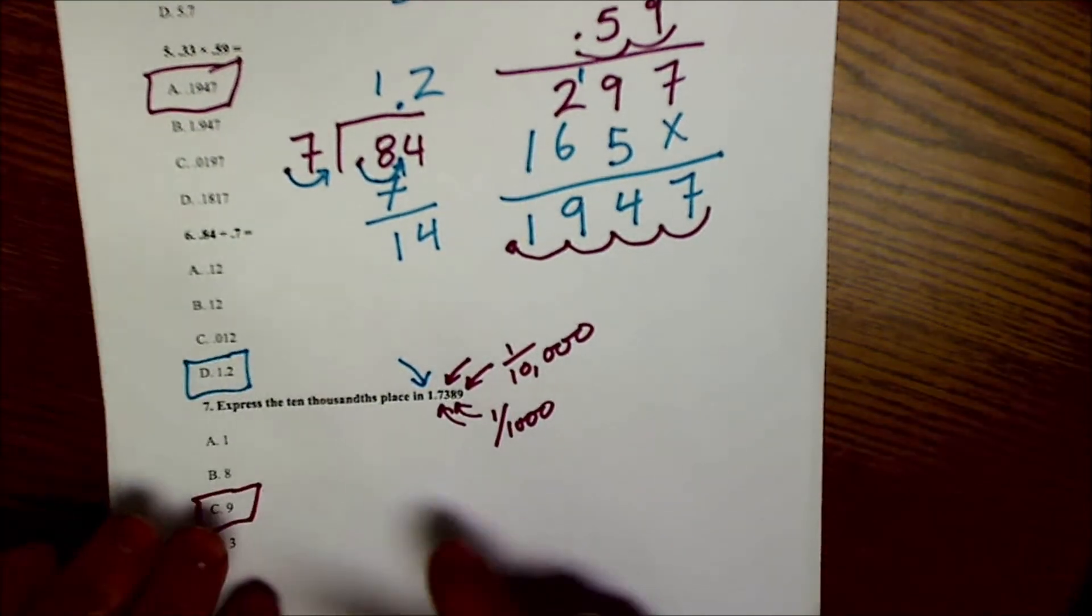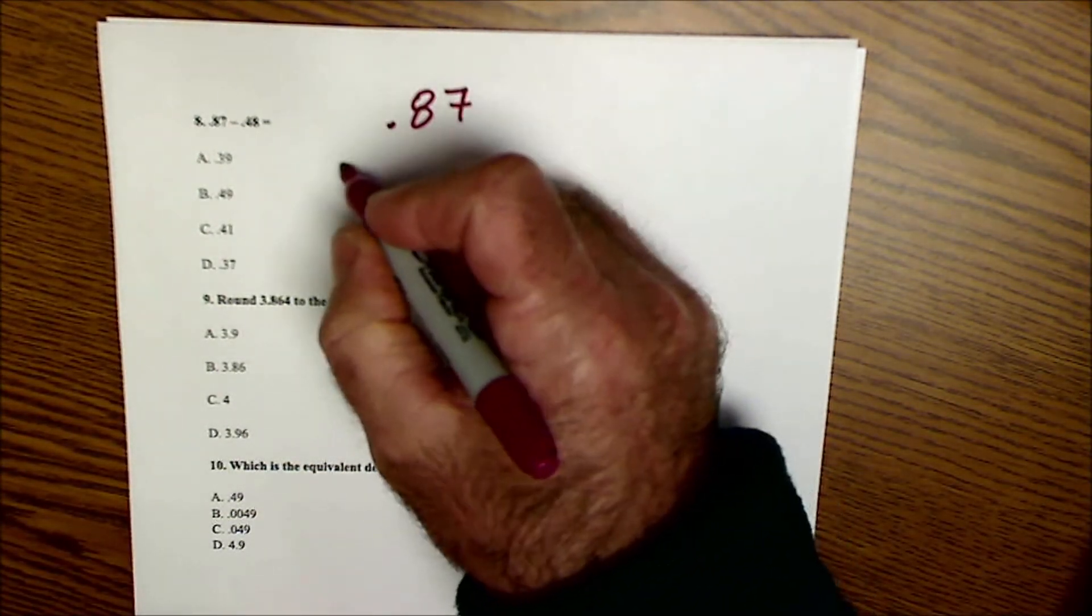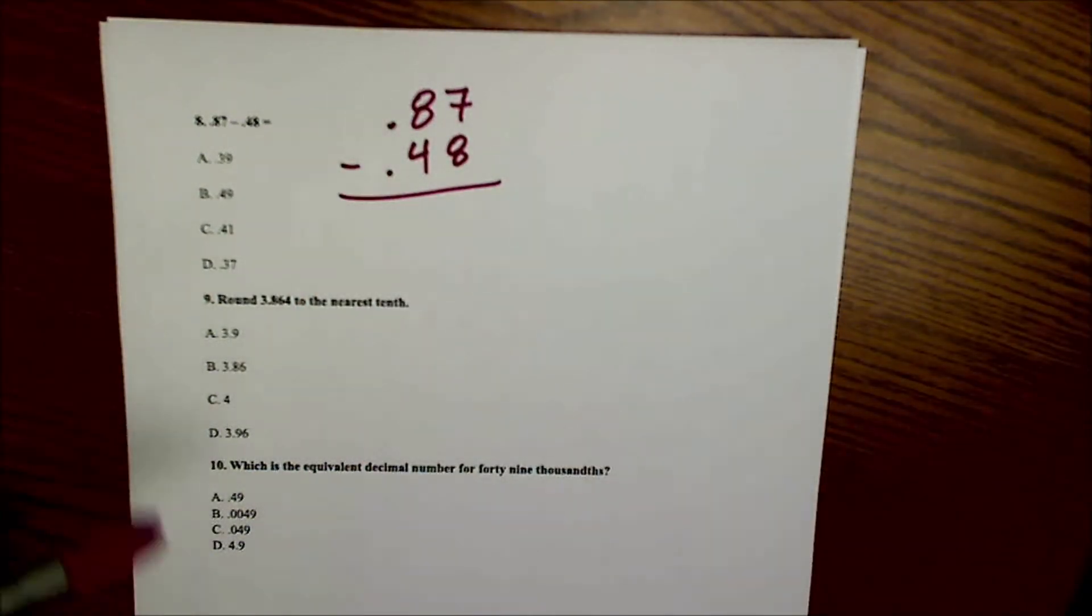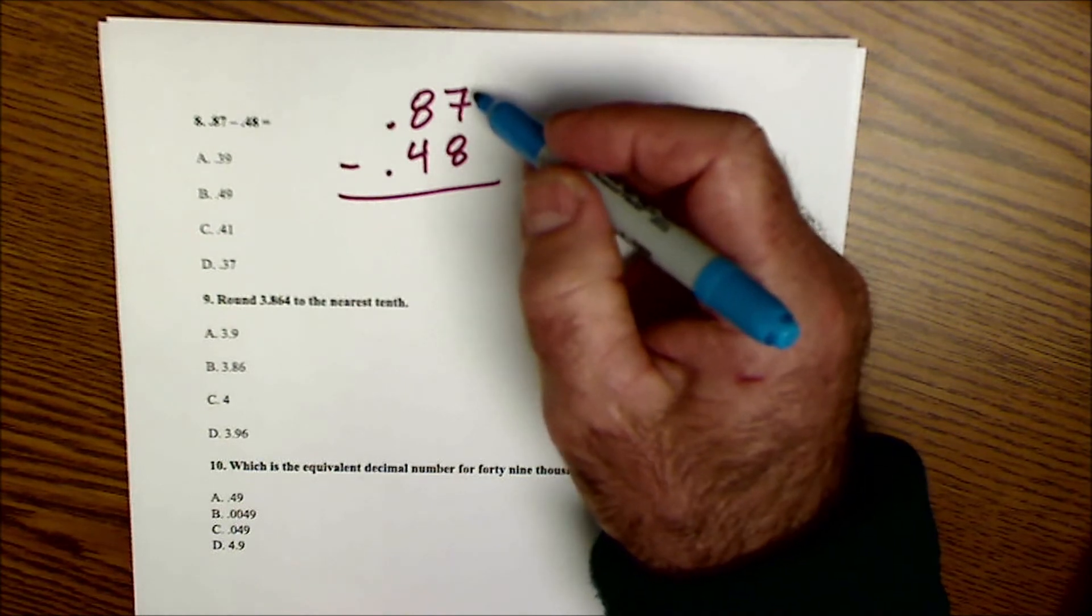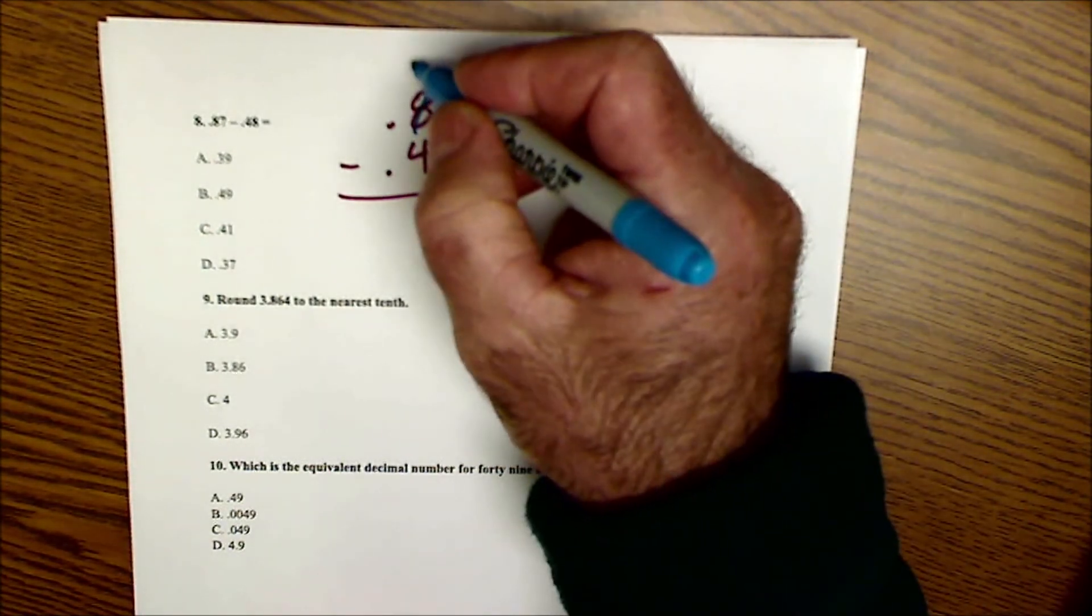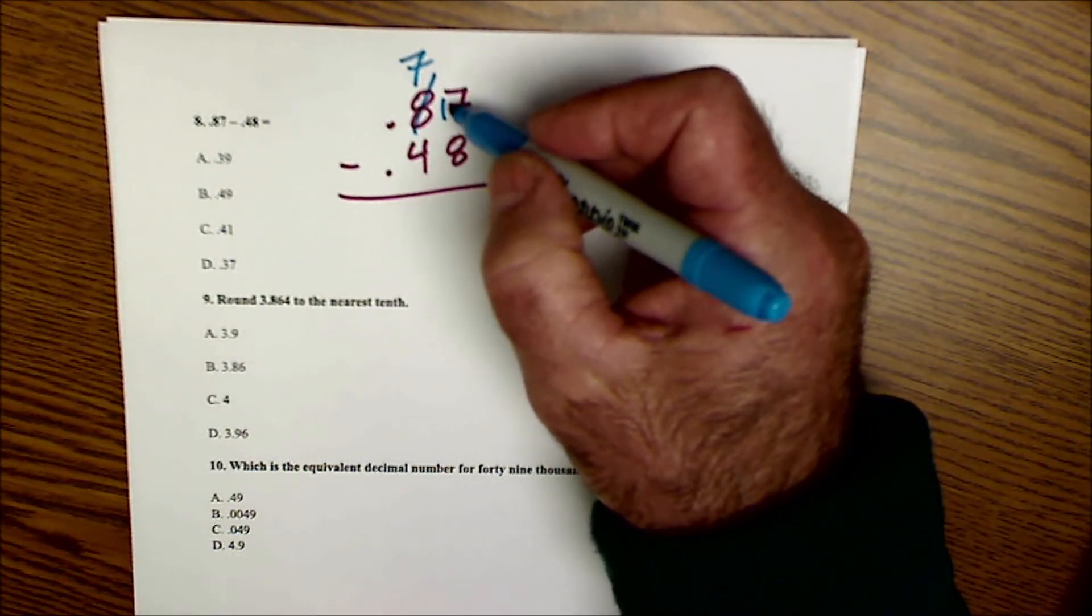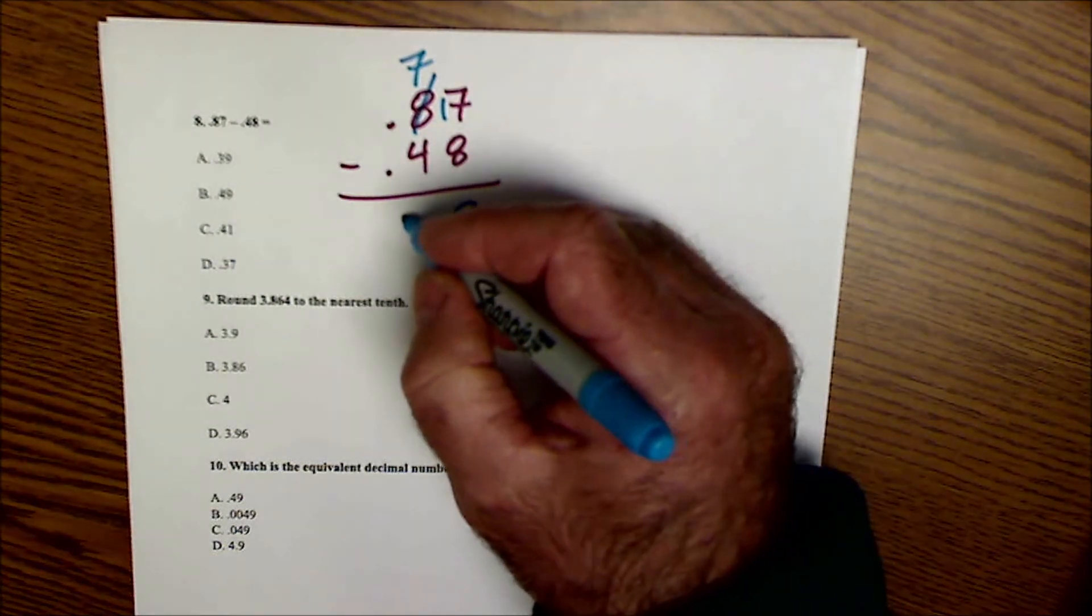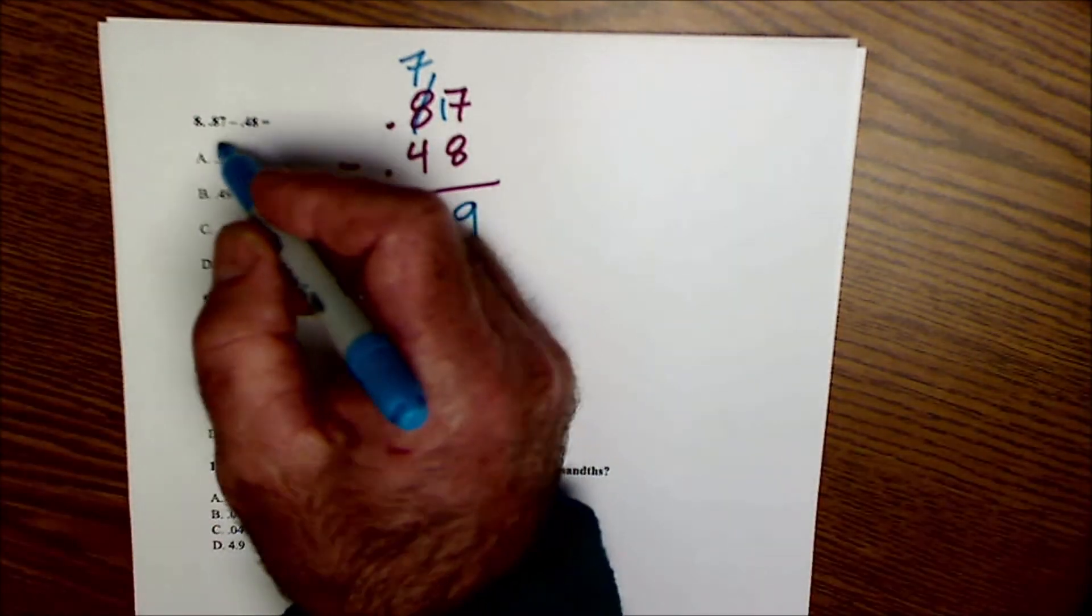All right, let's turn the page. Number 8, here I'm subtracting decimals. I'm gonna go .87 minus .48. Here again, adding and subtracting, I line up those decimal points. I cannot go 7 minus 8 because 8 is larger than 7, so I have to borrow. I'm gonna borrow from the tenths place, I'm gonna borrow 1 tenth to make this 7, and that's gonna give me 10 hundredths. The 10 and the 7 give me 17. 17 minus 8 is 9, 7 minus 4 is 3, and I end with .39, or problem 8 answer A.